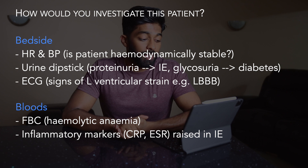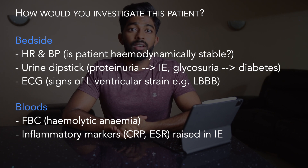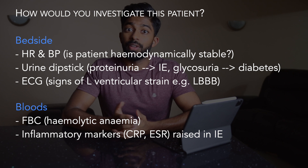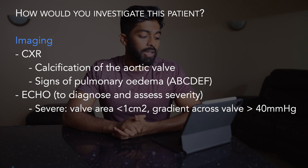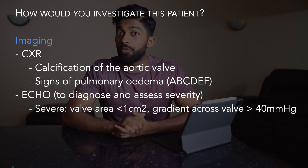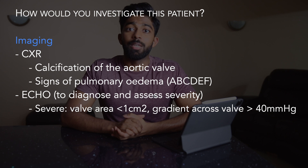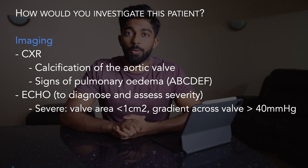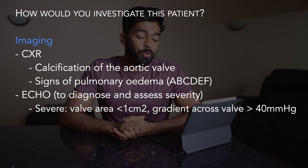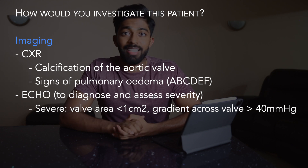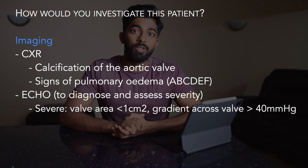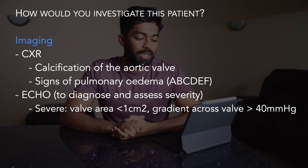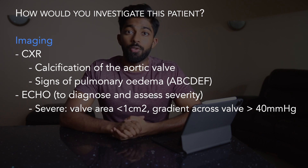Moving on to blood tests, I'd like an FBC to look for signs of haemolytic anaemia and inflammatory markers to look for signs of infective endocarditis. I'd then move on to imaging — starting with a chest X-ray to look for calcification of the aortic valve and signs of pulmonary oedema such as Kerley B lines and cardiomegaly. And then my gold standard test would be an echocardiogram, which would allow me to both diagnose and assess the severity of the aortic stenosis. Signs of severe aortic stenosis include a valve area of less than 1 cm² and a pressure gradient of more than 40 mmHg.